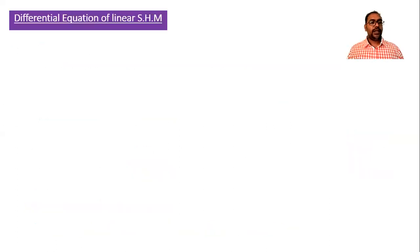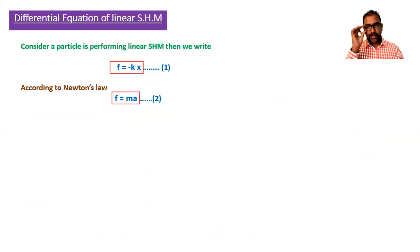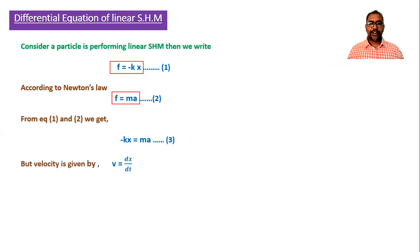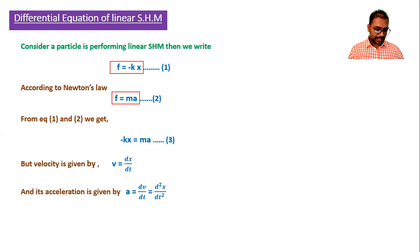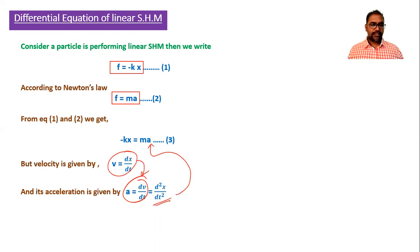Starting with F = −kx, and by Newton's second law F = ma, we equate the two: −kx = ma. We know that velocity v = dx/dt, and acceleration is dv/dt. Substituting v into the acceleration expression, acceleration equals d²x/dt².